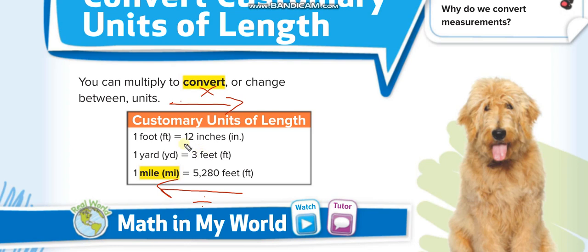For example, 3 feet equals how many inches? One foot is 12 inches, so 3 times 12 equals 36 inches. Also remember: one mile equals 5,280 feet. From feet to inches multiply by 12; inches to feet divide by 12. Yards to feet multiply by 3; feet to yards divide by 3. Miles to feet multiply by 5,280; feet to miles divide by 5,280.